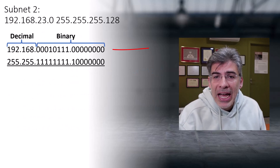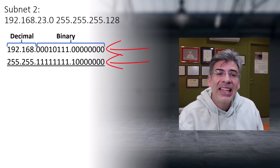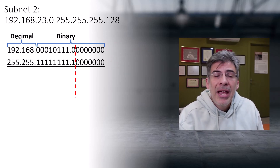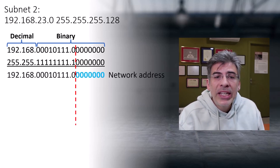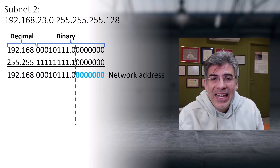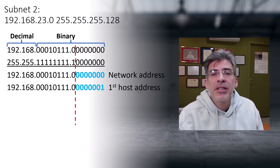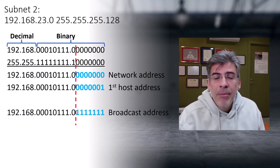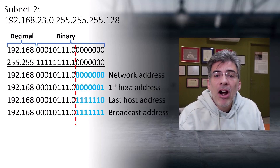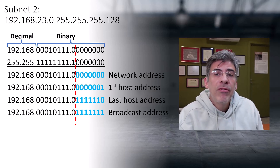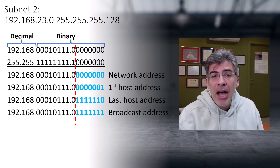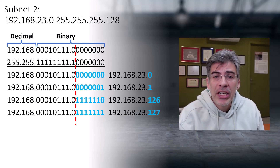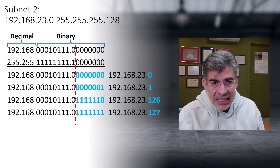Using our network address and subnet mask with the last two octets in binary, we draw our line to separate the host portion from the network portion. We get the network address by setting all seven host bits to zero, the first host address by adding one, the broadcast address by setting all host bits to one, and the last host address by subtracting one from the broadcast address. We now have all the vital information to assign IP addresses to this subnet.